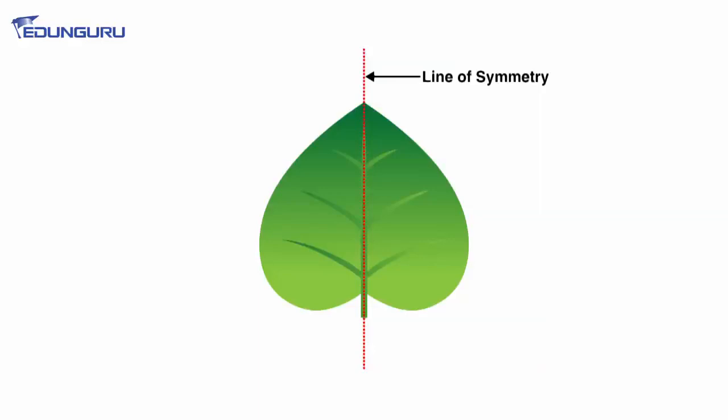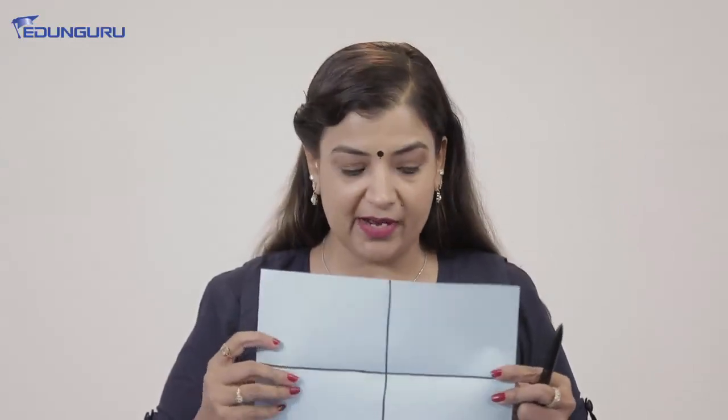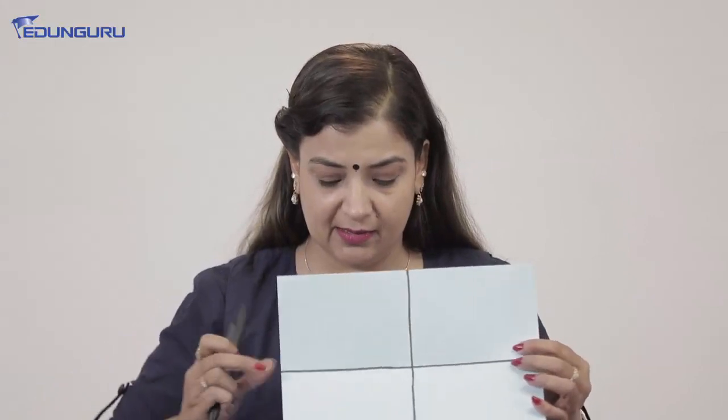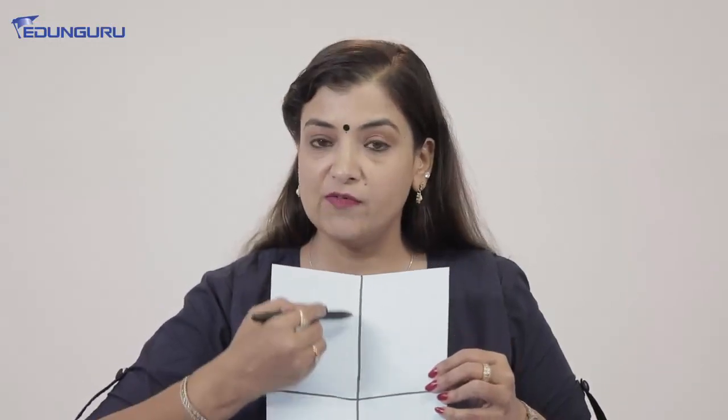Let us understand with another example. Here students, you can see this is a paper. It is rectangular in shape. Now, if I fold it about this line, see, these two parts coincide each other exactly. If I fold it about this line again, you can see these two parts coincide exactly. So this is its line of symmetry and this is also its line of symmetry.